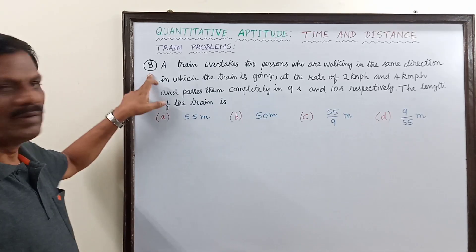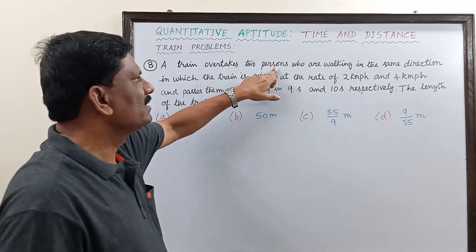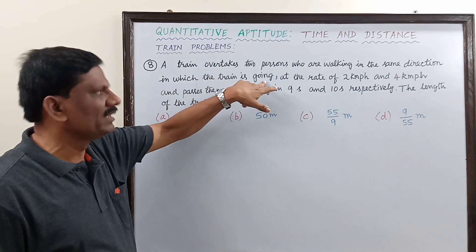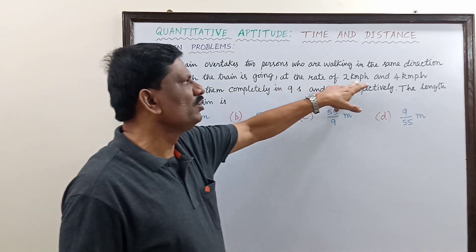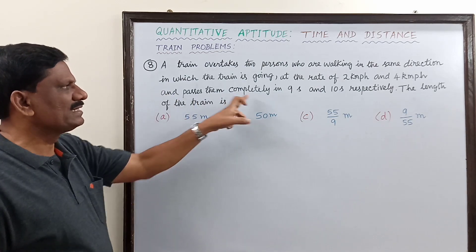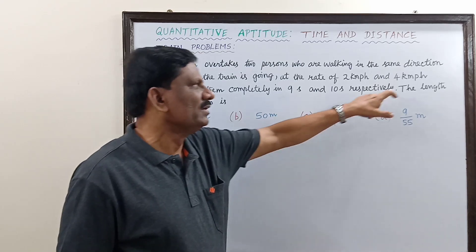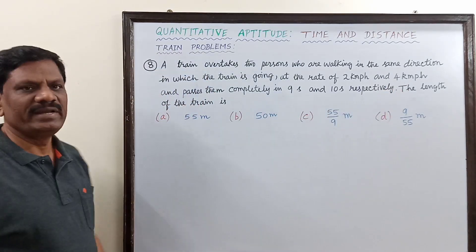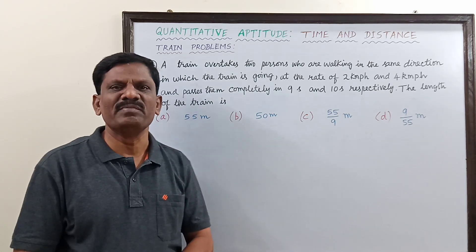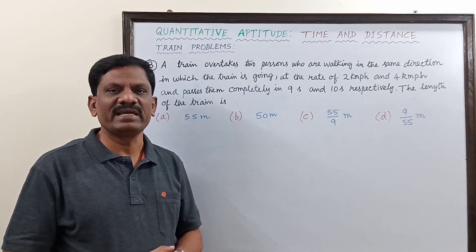Problem number eight: a train overtakes two persons who are walking in the same direction in which the train is going, at the rate of 2 km/h and 4 km/h, and passes them completely in 9 seconds and 10 seconds respectively. The length of the train has to be determined. This is a very brilliant numerical problem asked in many competitive exams like the Common Admission Test and IT sector interviews.